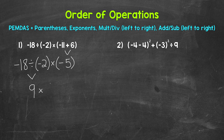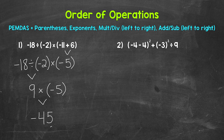Then we bring down everything we did not use: times negative 5. Now we have 9 times negative 5. A positive times a negative equals a negative, so 9 times negative 5 is negative 45. And this is our final answer: negative 45.